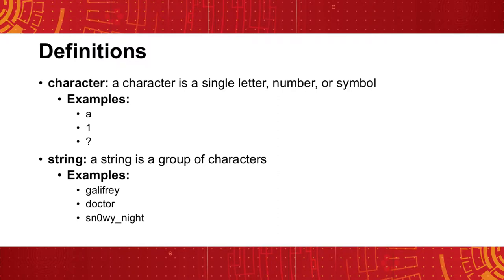To continue discussing these extremely useful commands, we need to discuss a few definitions. The first definition, character, is simply a letter, number, or symbol — any printable symbol. Characters are typically joined in strings. Strings are groups of characters joined to make words. Examples include Gallifrey, Doctor, and Sn0wy Night with a zero instead of an O — these are all strings. Strings are simply a contiguous group of characters, typically delineated with a space, so they are similar to words.